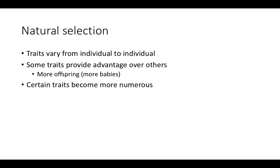Natural selection is when, instead of a person or agent selecting for particular properties, nature or the environment or a niche selects for certain properties. Traits vary from individual to individual, and some of those traits provide advantages over others. For example, if you live near the equator and have fair skin, you're likely to get sunburned and sick, reducing reproduction. But darker skin provides an advantage there. Conversely, closer to the Arctic Circle, lighter skin color may provide advantages — perhaps camouflage from predators. So the environment selects for certain traits to become more numerous over successive generations.